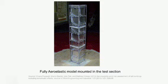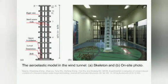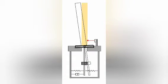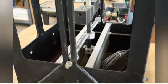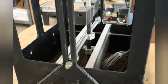We can estimate the vibration amplitude by performing aero-elastic wind tunnel tests. Two types of wind tunnel tests are performed to evaluate the aero-elastic effect of flexible high-rise buildings. One is called a fully aero-elastic test and another is called a partial aero-elastic test, or base-pivoting model building test.